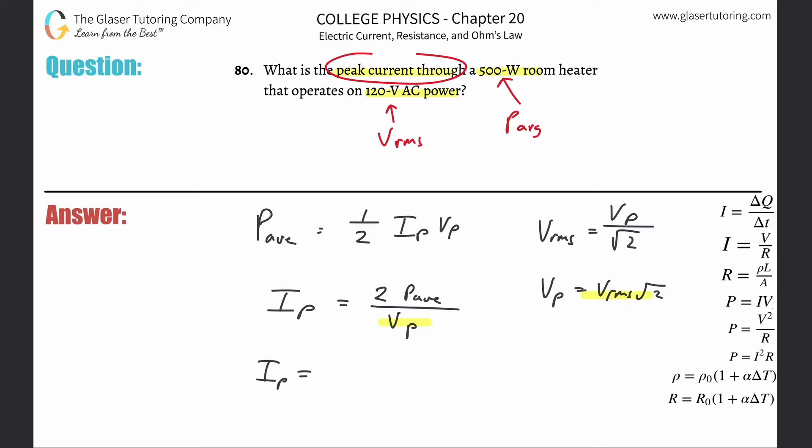So there's going to be two times that average power of 500 watts divided then by the root mean square voltage which was 120 volts multiplied then by root of two. And let's see what we get. So this is going to be now two times 500 divided then by parenthesis 120 times the root of two.